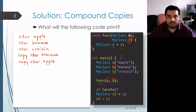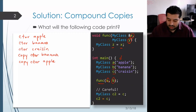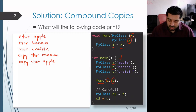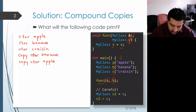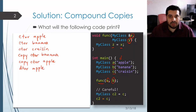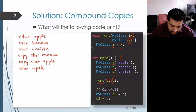Now we reach the end of func, which runs the destructors for the local objects. Local objects get destroyed in the reverse order of creation, so the last thing created was z, and that's the first to be destroyed, giving us 'dtor apple'. The previous thing created was y, which had the string 'banana', so we get 'dtor banana'.